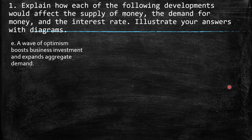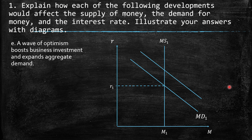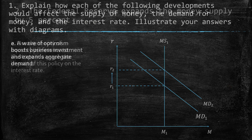e. A wave of optimism boosts business investment and expands aggregate demand. People naturally need more money to carry out transactions. So we can infer a shift to the right in money demand. As a consequence, we have a higher interest rate at the same equilibrium quantity of money.